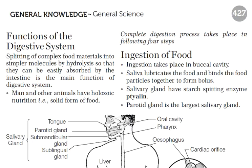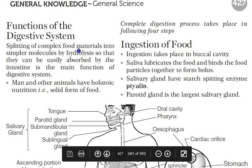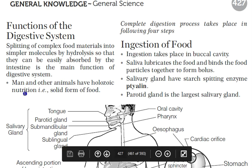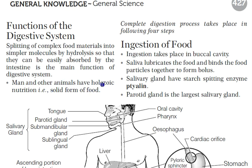The main function of the digestive system is splitting complex food material into simpler molecules by hydrolysis so that they can be easily absorbed by the intestine. Undigested parts are easily eliminated. Humans and other animals have holozoic nutrition — complete internalization of solid food taken into the mouth and chewed.